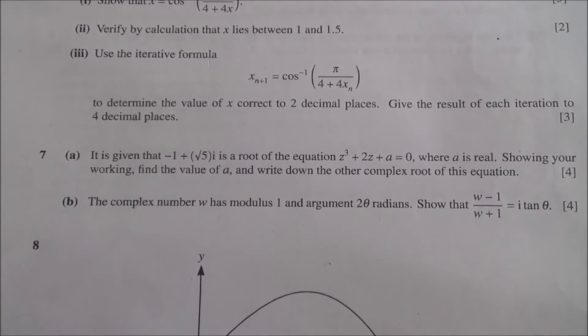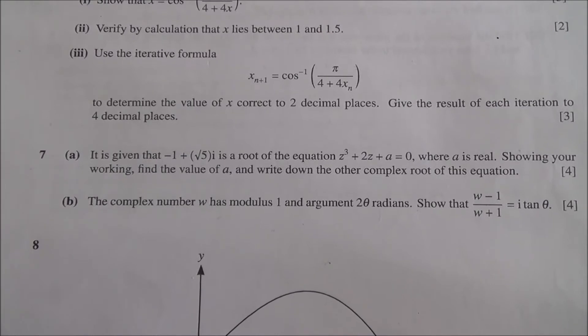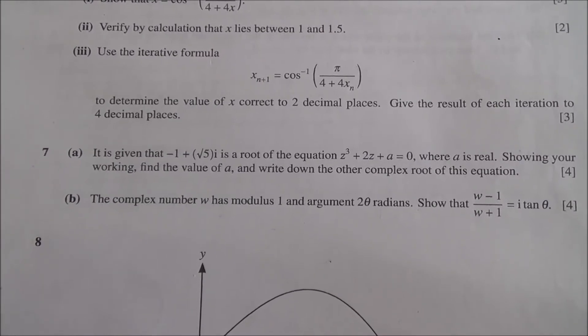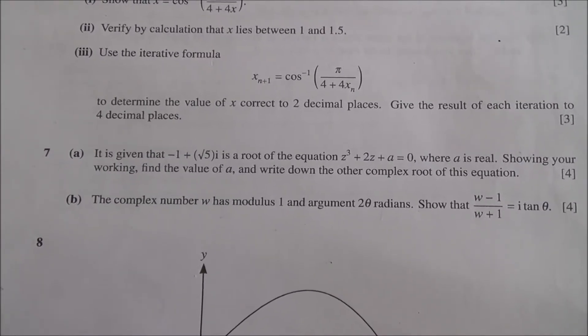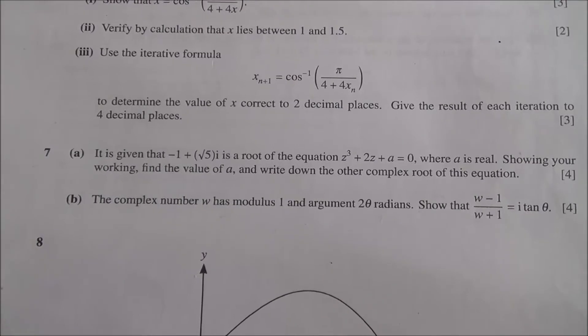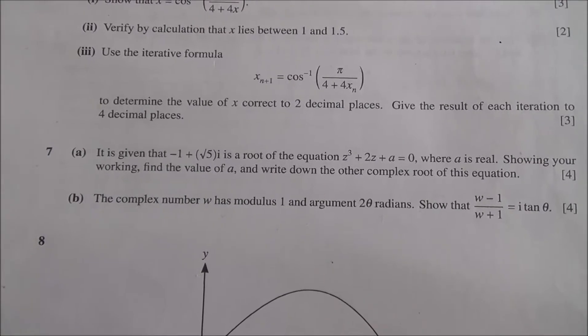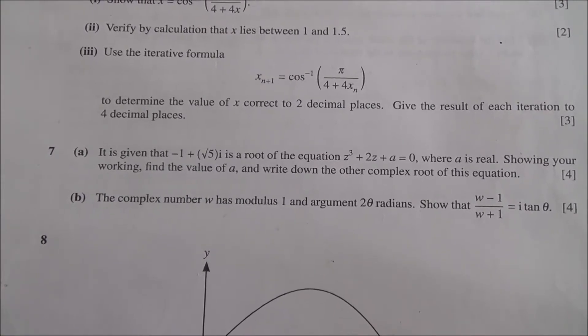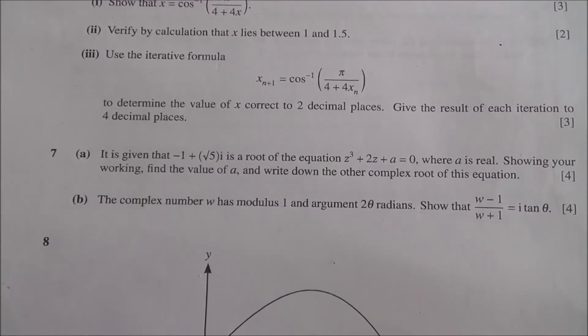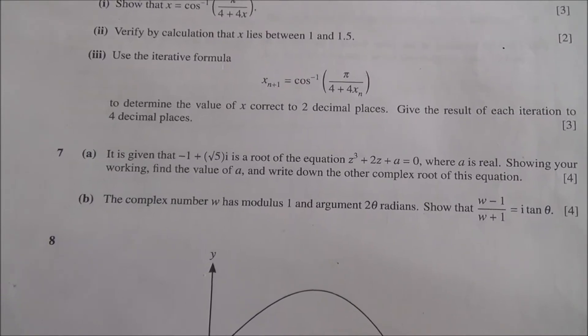For the second part, the complex number w has modulus 1 and argument 2 theta radians. Show that w minus 1 over w plus 1 is equal to i tan of theta. 8 marks.